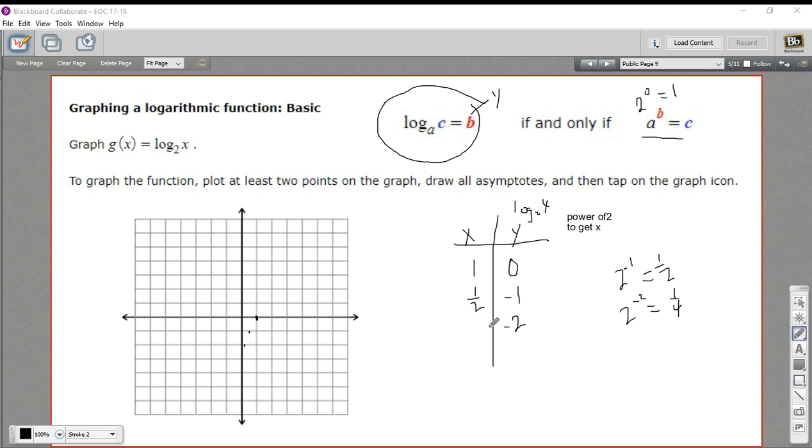You'll see there's no power that we can raise 2 to to get 0. So we're going to have an asymptote along the y-axis. We'll draw that in. This tail down here is going to get closer and closer, smaller and smaller fractions, but never quite touching 0.